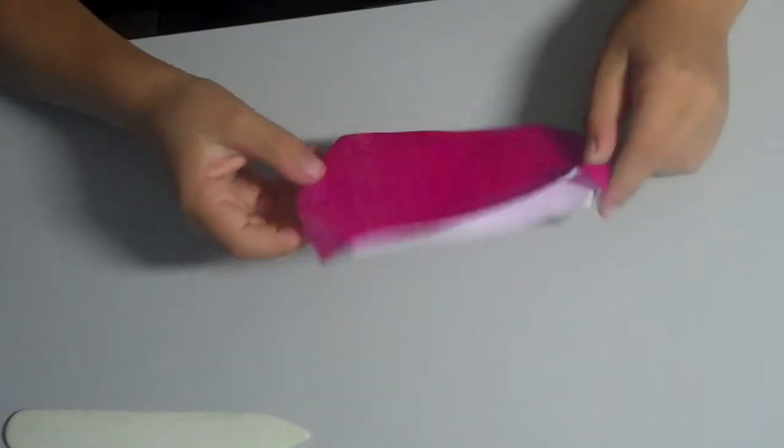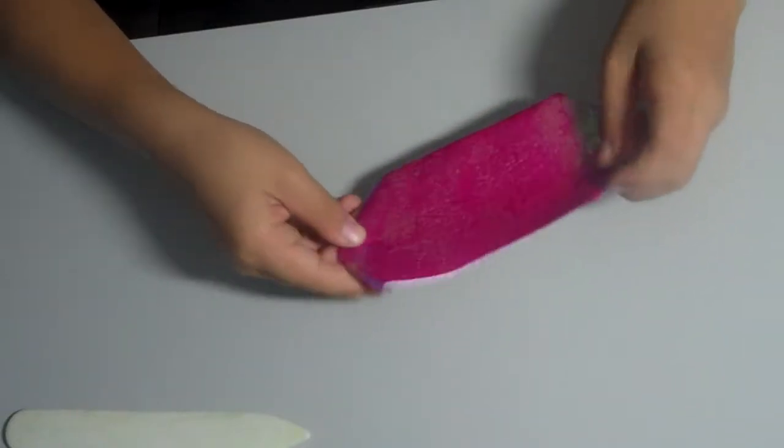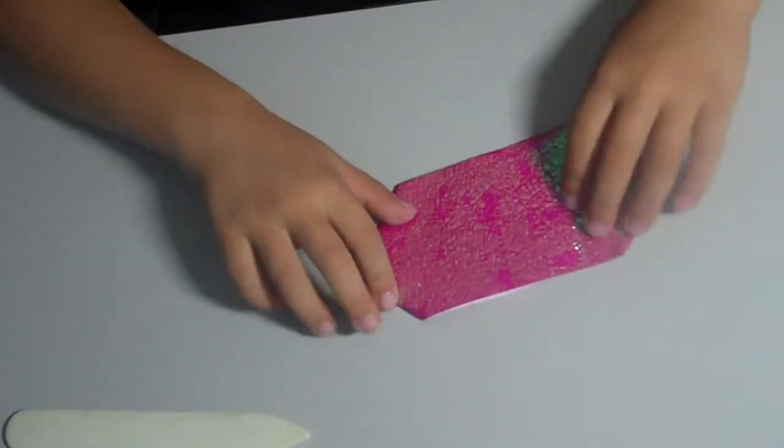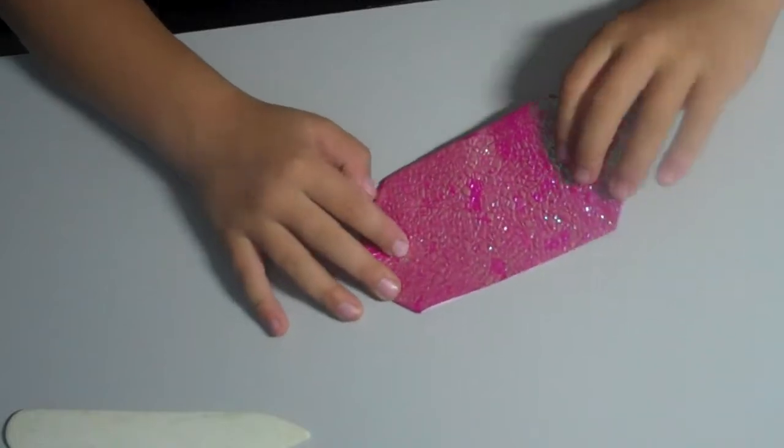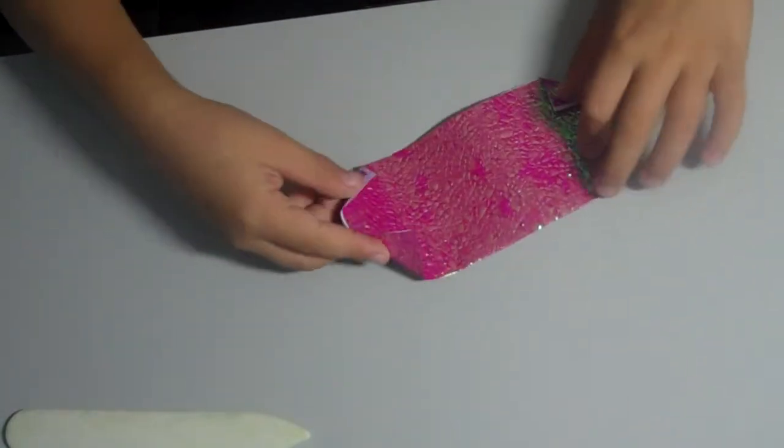Then you turn it over. And then if you see it's not like a pickle, well if it looks like a pickle, then you have to turn it over to make it into the cup.